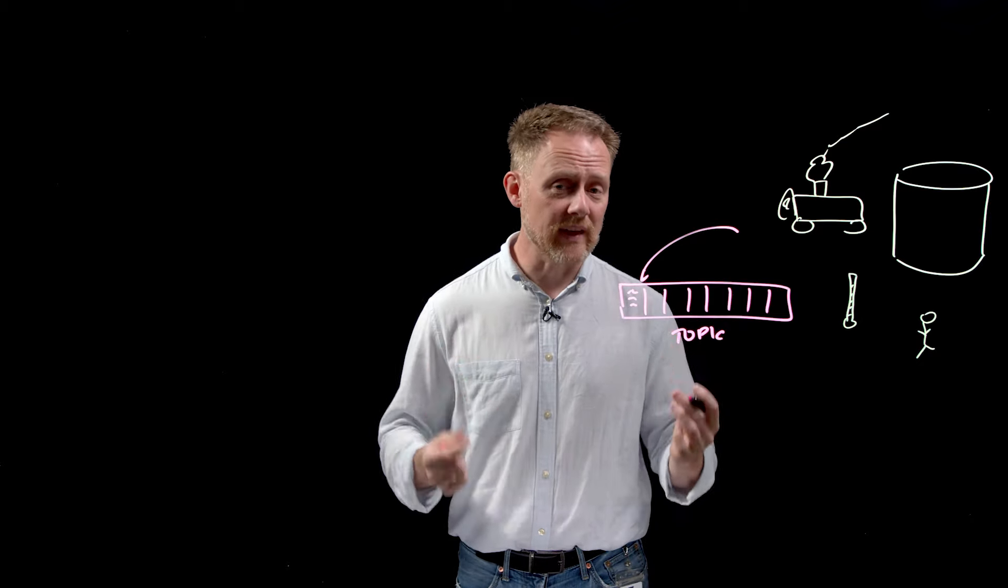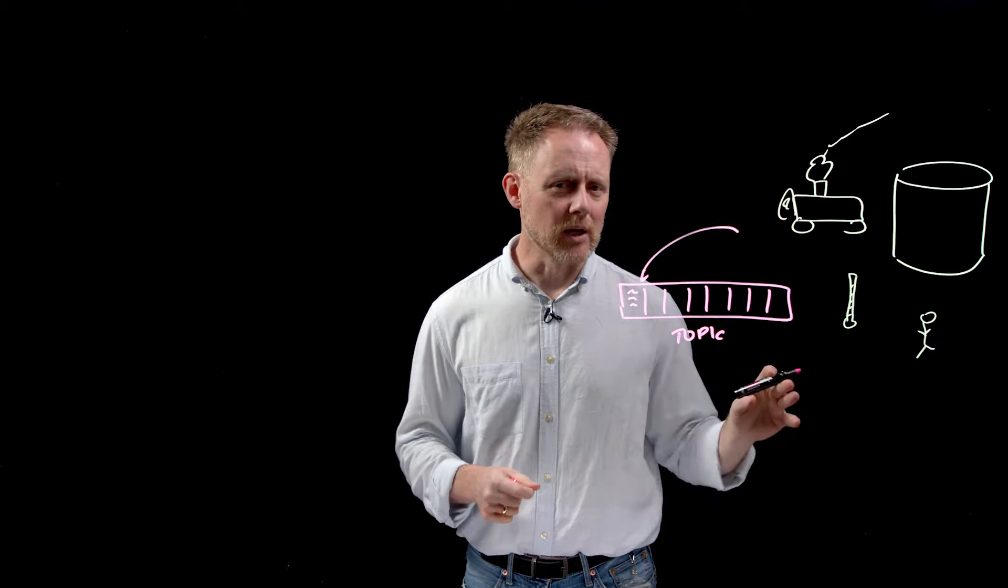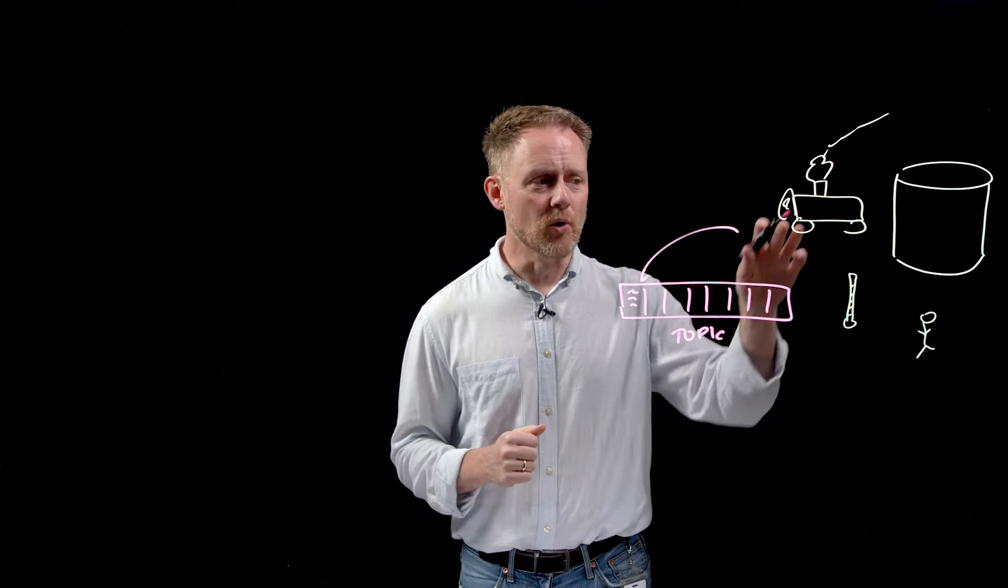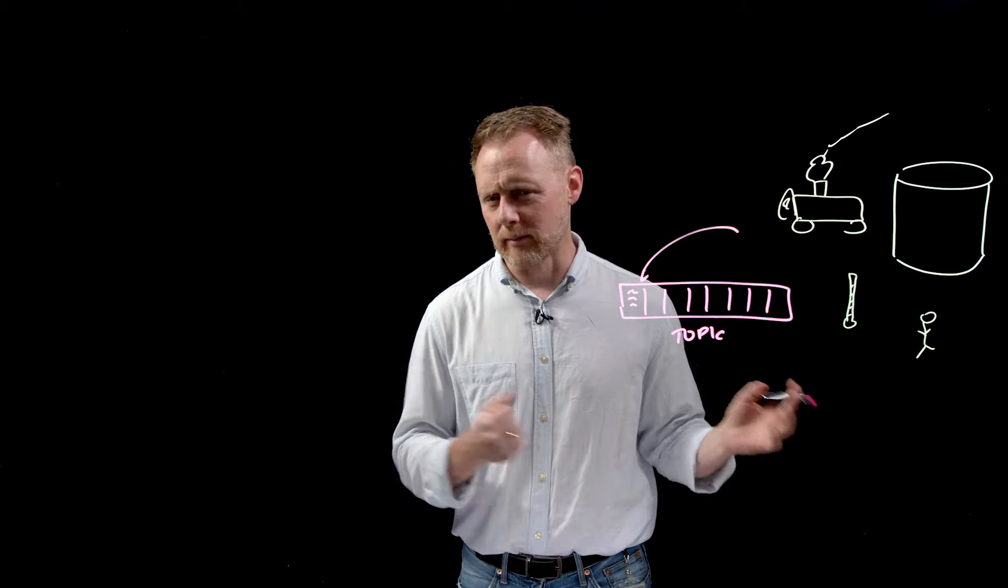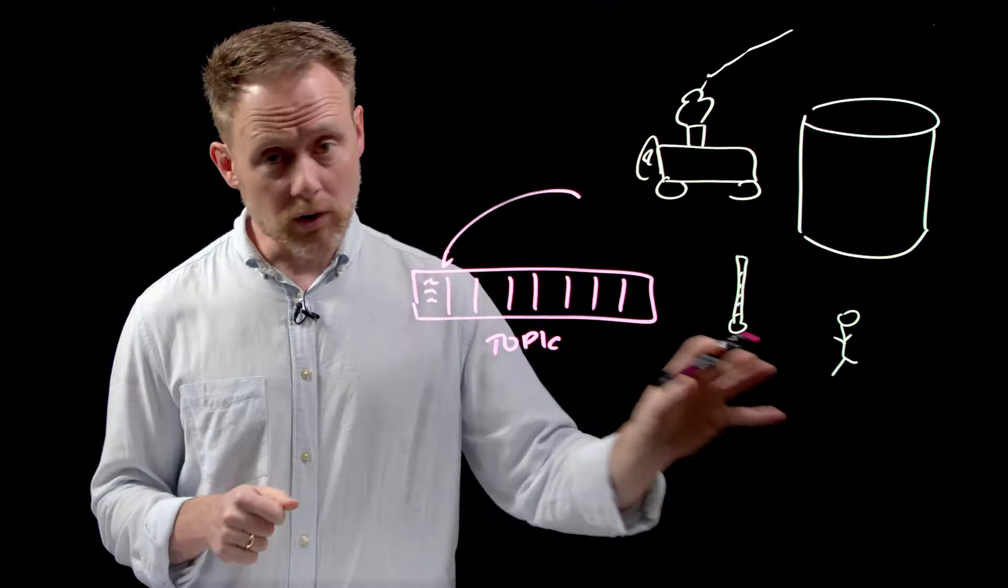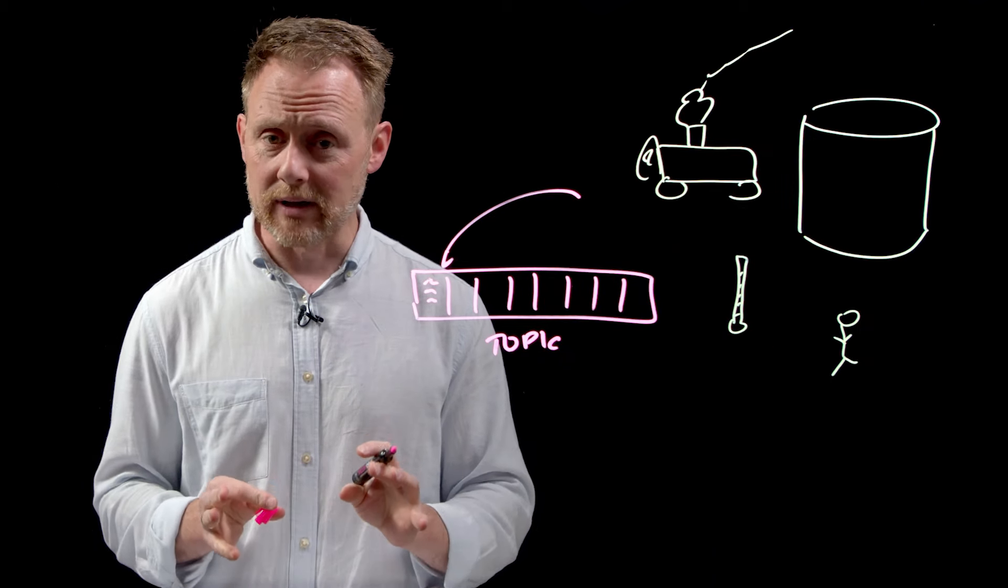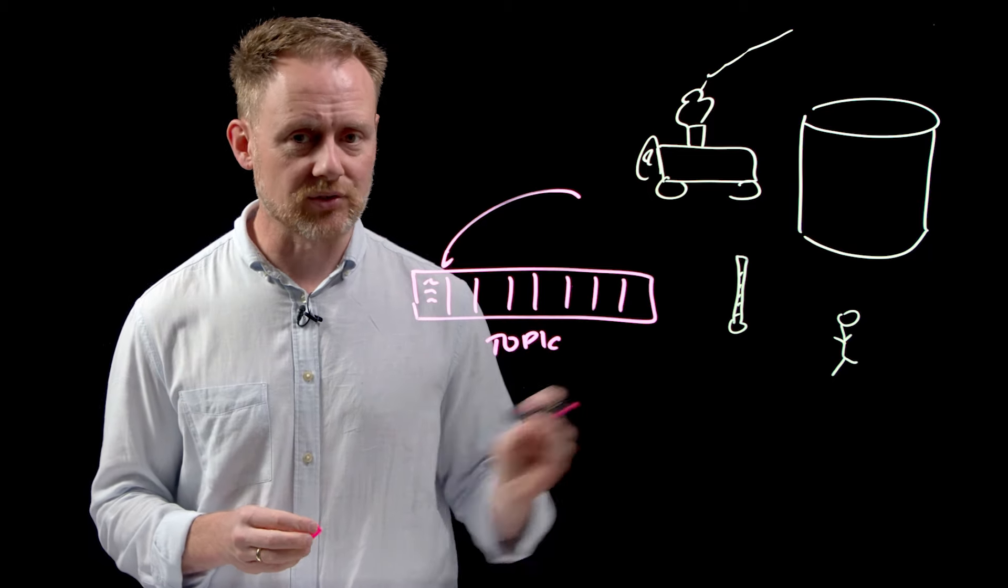Each one of those events represents a thing happening in the business. Like remember our user—maybe a user updates her shipping address, or a train unloads cargo, or a thermostat reports that the temperature has gone from comfy to 'is it getting hot in here?' Each one of those things can be an event stored in a topic. And Kafka encourages you to think of events first, and things second.